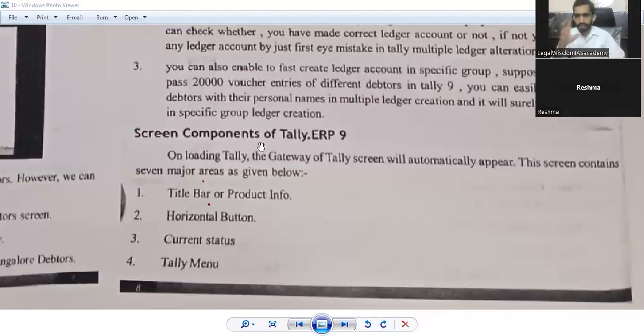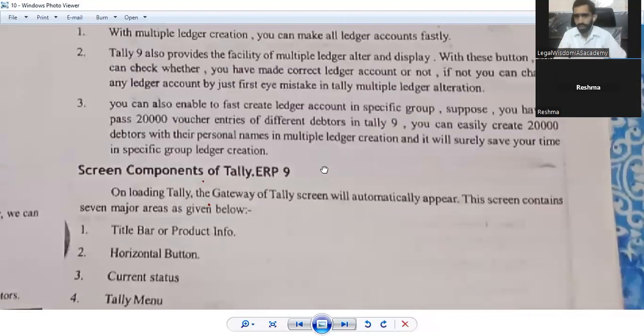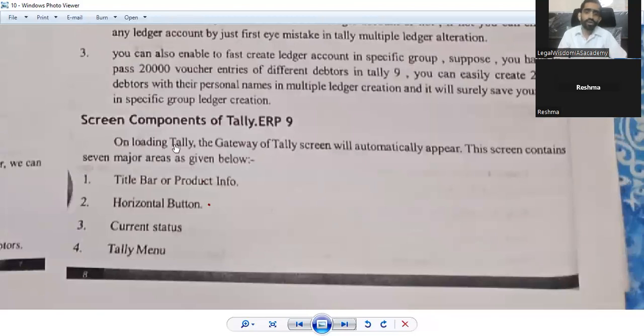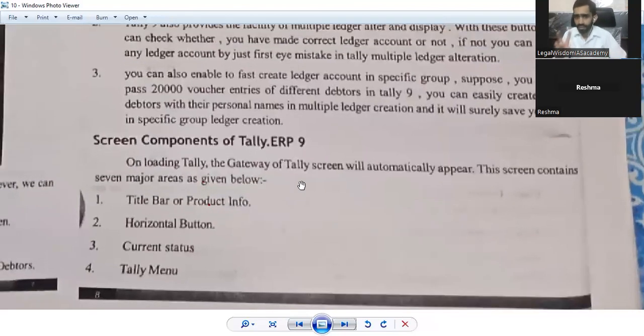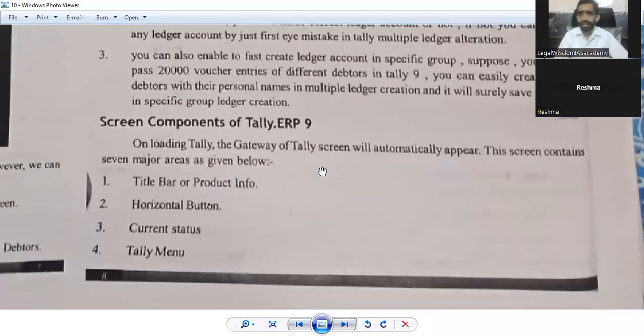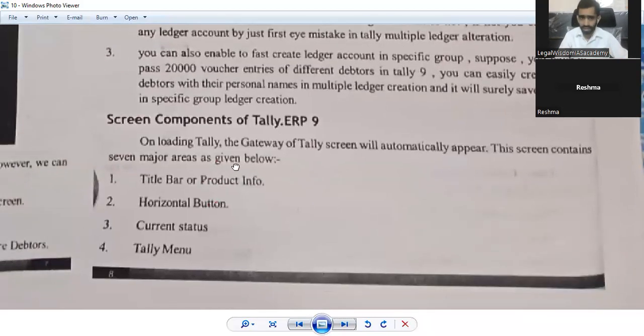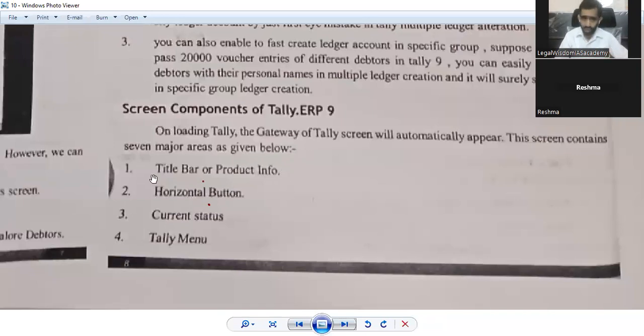Now, let us discuss the screen components of Tally ERP 9. What is ERP? Enterprise Resource Program - E for Enterprise, R for Resource, P for Program. On loading Tally, the Gateway of Tally screen will automatically appear. This screen contains seven major areas.